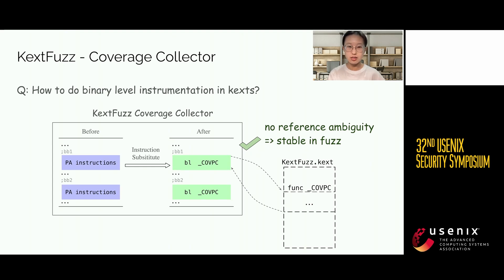However, we found that pointer authentication instructions are widely distributed in kernel extension binaries. These instructions are designed to guard kernel extensions against malicious pointer modification in real-world attacks. However, they can be neglected in the fuzzing scenario. We do not need to protect the system from attackers during fuzzing, and the pointers corrupted by random fuzzing inputs can usually crash the system itself without pointer authentication protection. Therefore, we can remove these instructions in the binary, and the freed space can be used to add coverage collection instructions.